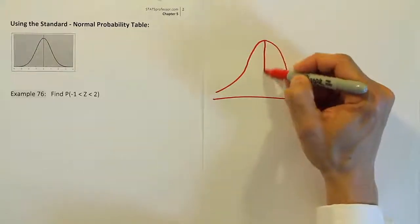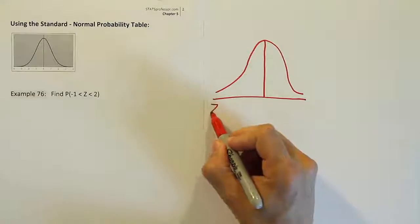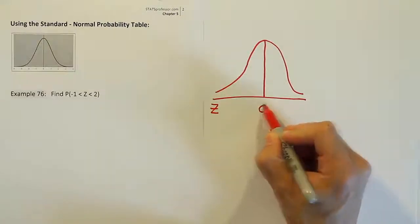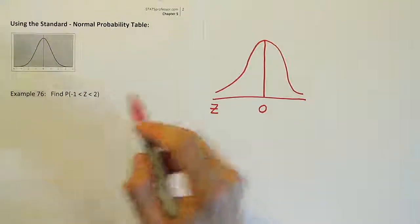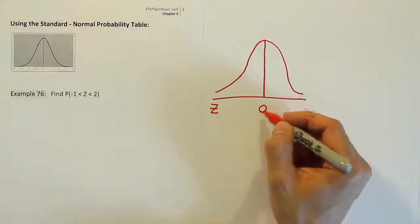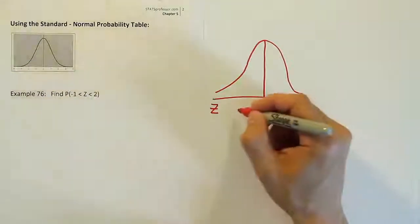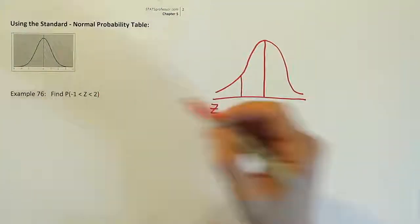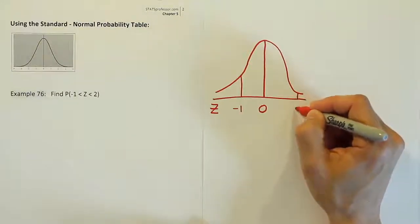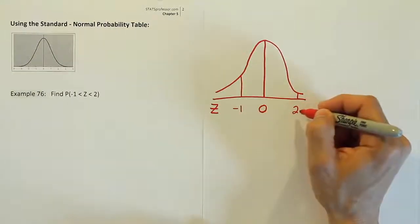And once you're done drawing the bell curve, you're going to label a z-axis centered at 0. Then from there, if the center is at 0, you're going to put these two numbers on the curve where they belong relative to 0. So negative 1 should be on the left, because obviously negative 1 is less than 0, and 2 should be to the right, because 2 is to the right of 0 on the number line.